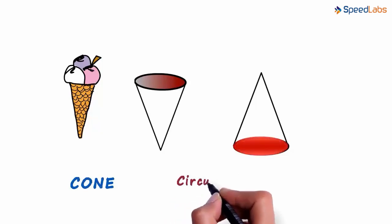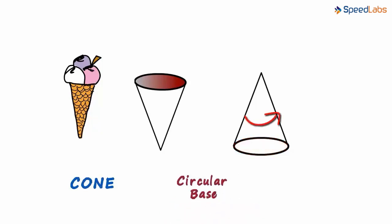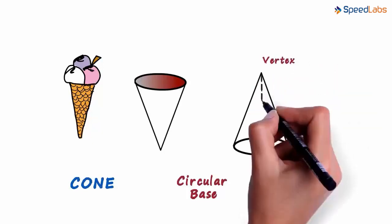The cone has one circular base and a slant curved surface. The slant curved surface begins at the vertex and grows towards the base.